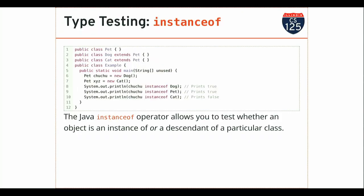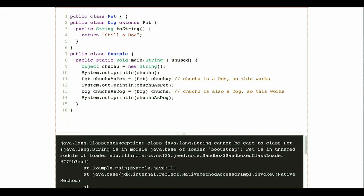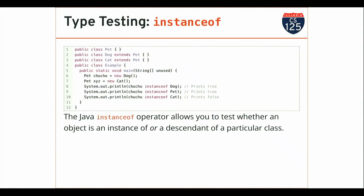Any questions on this quick review of polymorphism? This is complicated stuff — it requires you to think about the relationships and what it means for an object to be one type or another. When I create an object in Java, I create one thing. That object has a class that establishes a relationship with other objects, but I still have only created one object. If I lose a reference to that object, that object is deleted.